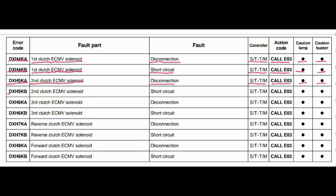Error code DXH5KB. The faulty part is the second clutch ECMV solenoid. The fault is a short circuit. The steering and transmission controller is related to this fault. Action code is E03, caution lamp will blink, and caution buzzer will beep.